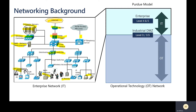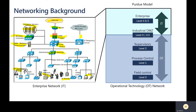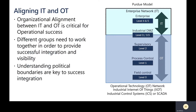You can see the distinction between the IT network and the OT network. For operational technology networks, they're broken down further: the supervisory layer is at level two, the process control layer is at level one, and the field control layer is at level zero. You should also be aware of terms like industrial Internet of Things, industrial control systems (ICS), and SCADA — we'll dive into those in a bit more detail.